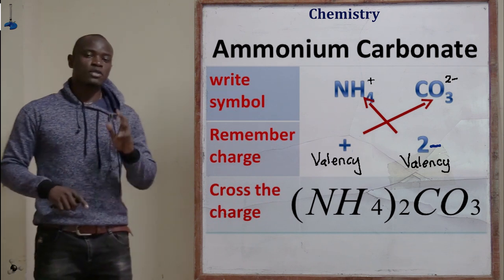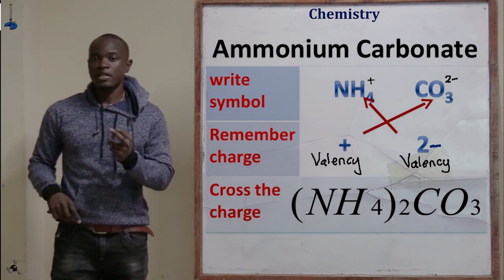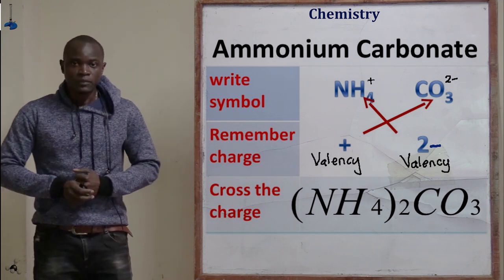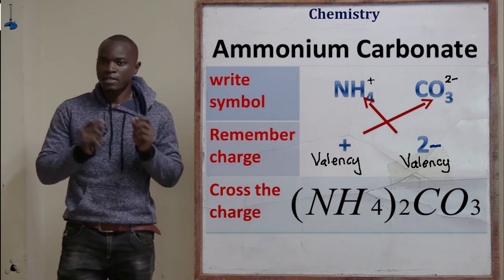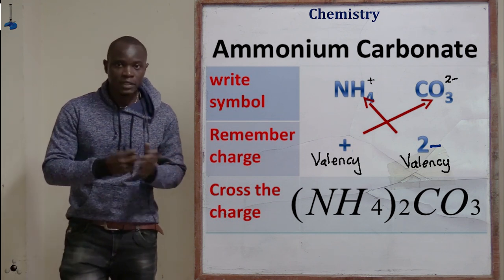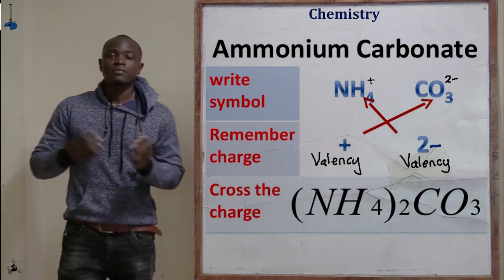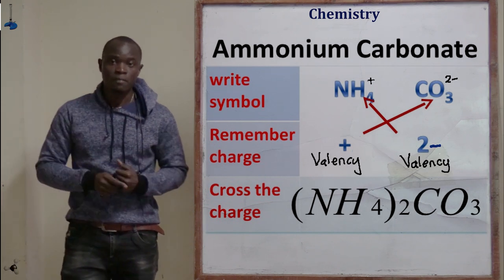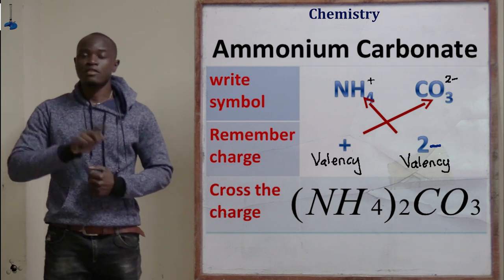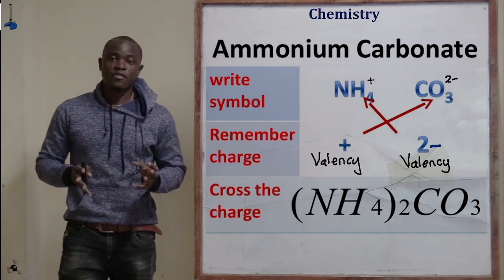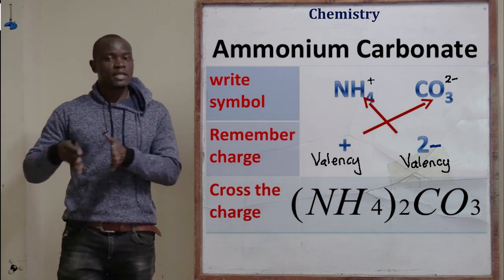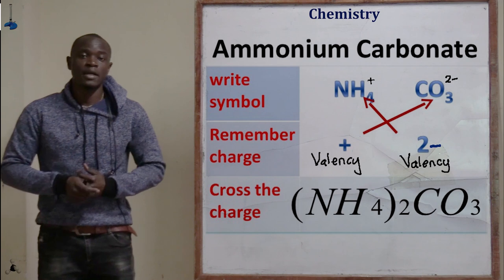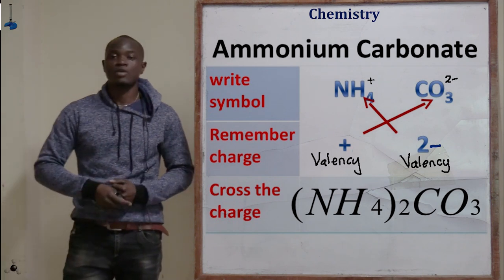In ammonium carbonate, we have two radicals: the ammonium radical and the carbonate radical. Each radical has a characteristic valency or charge. The valency of ammonium is always 1 positive, and the valency of carbonate is 2 negative. By knowing these valencies, we can write the chemical formula of ammonium carbonate.